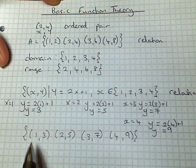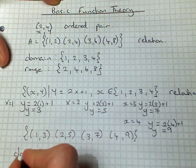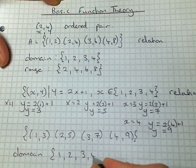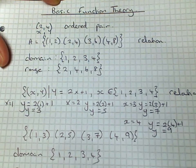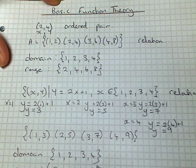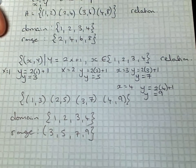Now we can read off our domain from that. We know that our domain are our x values, so the domain of our relation is 1, 2, 3, and 4. And the range is the y values, which is 3, 5, 7, and 9.